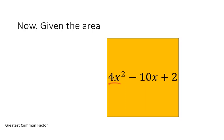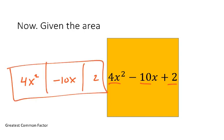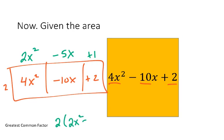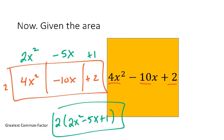If we have three terms, the same concept applies. For 4x² - 10x + 2, I'll use the box organizer again. The greatest common factor is 2, since 2 is the largest value that's a factor of 4, -10, and 2, and we can't pull out any x. Then 2 times something gives 4x², so that's 2x². Two times something gives -10x, so that's -5x. And 2 times something gives 2, so that's +1. The factored form is 2(2x² - 5x + 1).